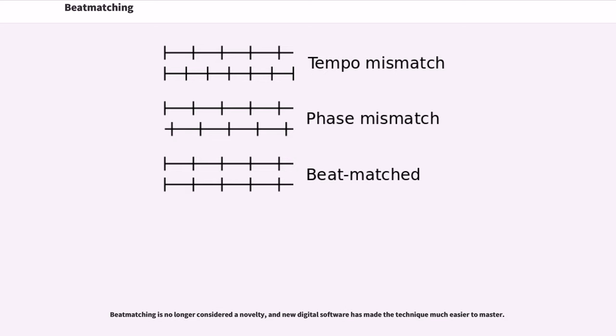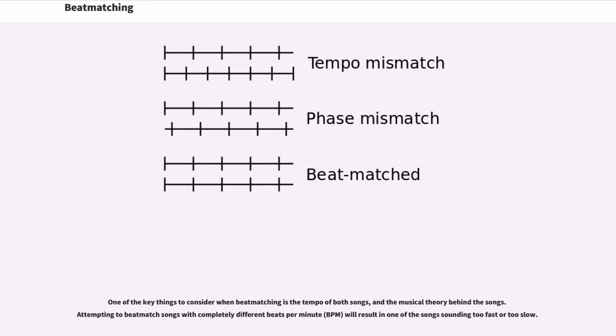New digital software has made the technique much easier to master. One of the key things to consider when beatmatching is the tempo of both songs and the musical theory behind the songs. Attempting to beatmatch songs with completely different beats per minute (BPM) will result in one of the songs sounding too fast or too slow.